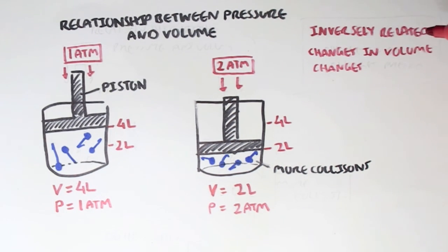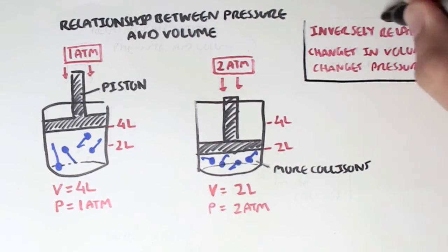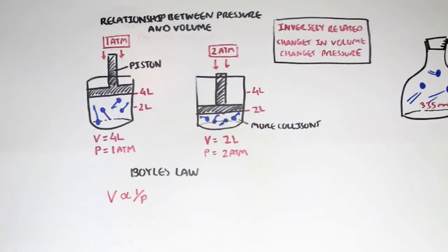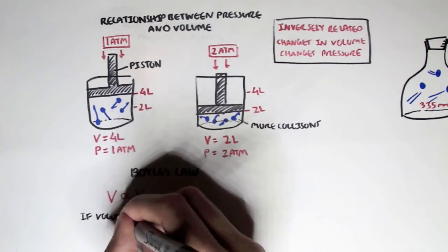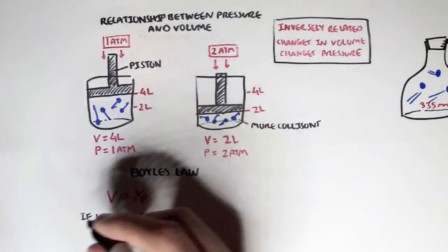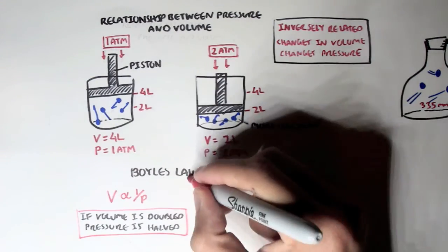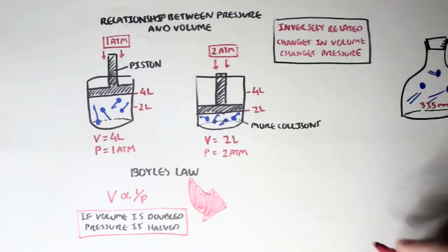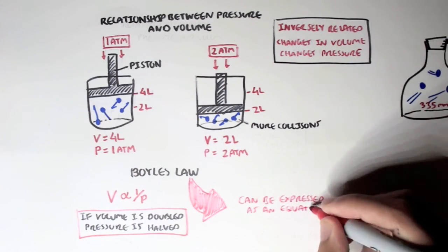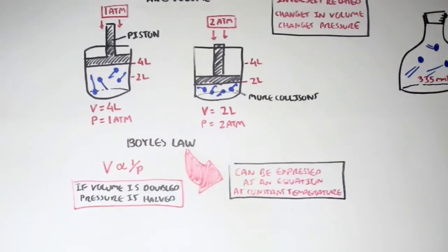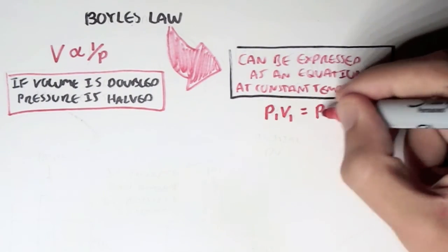Changes in volume will change pressure. This brings us to Boyle's law, which states that volume is proportional to one half the pressure. So if volume is doubled, this means the pressure is halved. Boyle's law can also be expressed as an equation at constant temperature: P1V1 equals P2V2, where P1 and V1 are the initial pressure and volume, and P2 and V2 are the final pressure and volume.